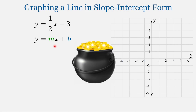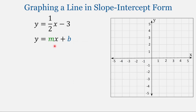The final treasure isn't gold or jewels, but the graph of the equation. So where do we start? We can start at any point on the line — what point do we know from the equation? We know the y-intercept, and that's where we're going to start.